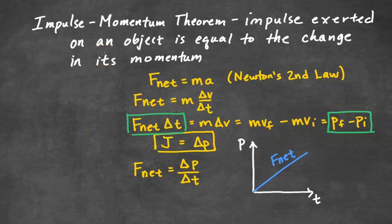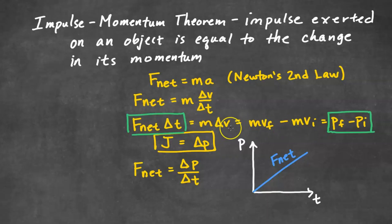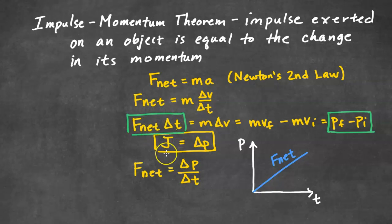Now we're going to connect momentum and impulse. The impulse-momentum theorem tells us that the impulse exerted on an object is equal to the change in its momentum. We start with Newton's second law: F_net = ma. Since acceleration is Δv/Δt, we can write F_net = m·Δv/Δt. Moving Δt to the left gives F_net·Δt = m·Δv, which we can rewrite as mv_final − mv_initial, which is P_final − P_initial. So on the left we have F_net·Δt, which is impulse J, and on the right we have the change in momentum ΔP. So impulse equals the change in momentum — this is the impulse-momentum theorem.